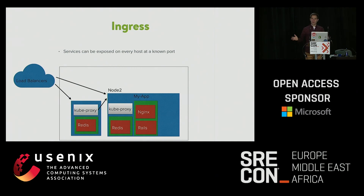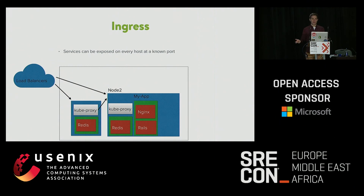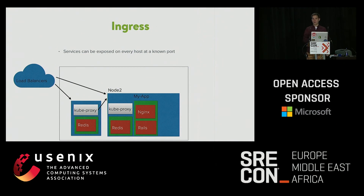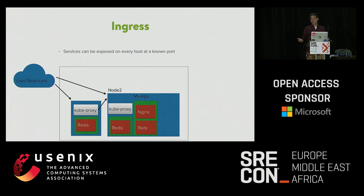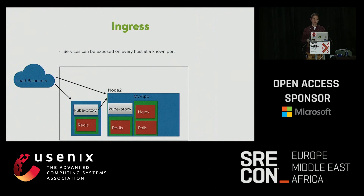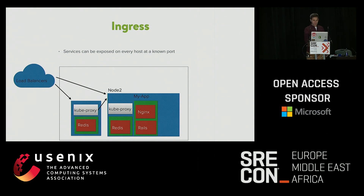Services can do more than just DNS round-robin. They can expose a port on every node — any request that comes in to, say, port 5002 is really for this service, and it'll forward to the correct pods. So load balancers don't have to go through another layer of Nginx; they can just evenly spread traffic to your cluster nodes. A utility called kubeproxy, which lives on all your nodes for free, plays with your IP tables and makes sure the forwarding happens.